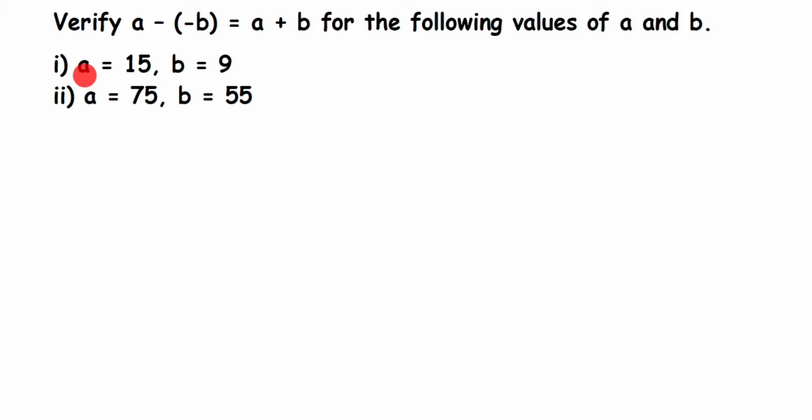The first one: a value is 15 and b value is 9, so we're going to see if LHS and RHS are equal. For the first case, they have given a value is 15 and b value equals 9. We'll take the LHS part first.